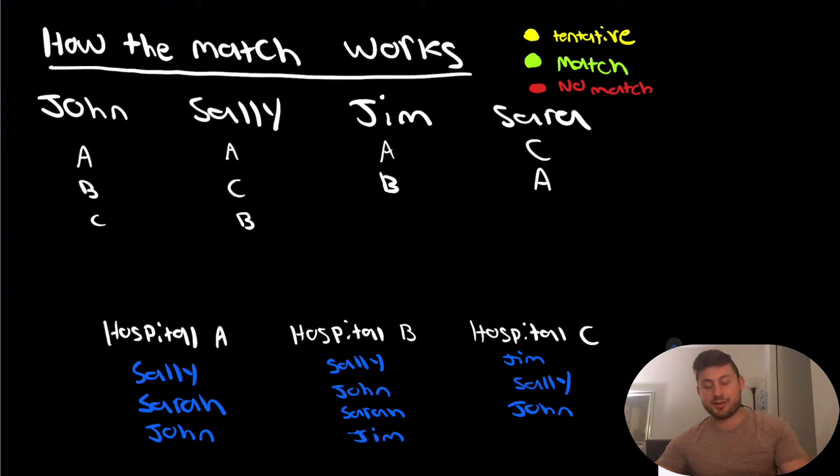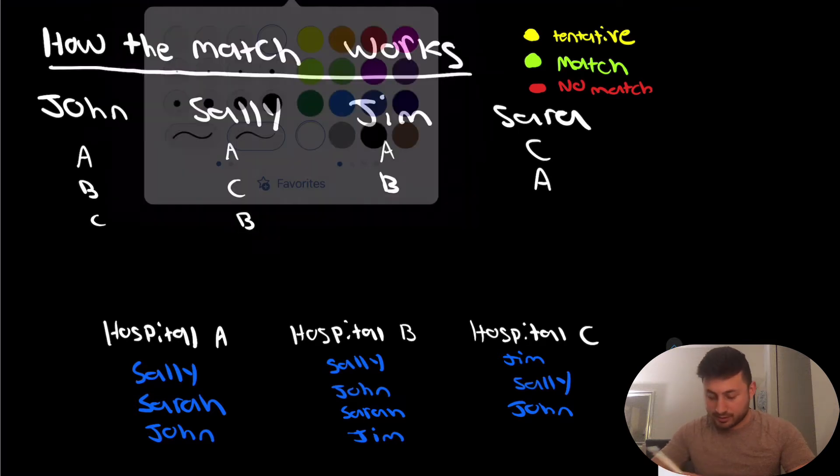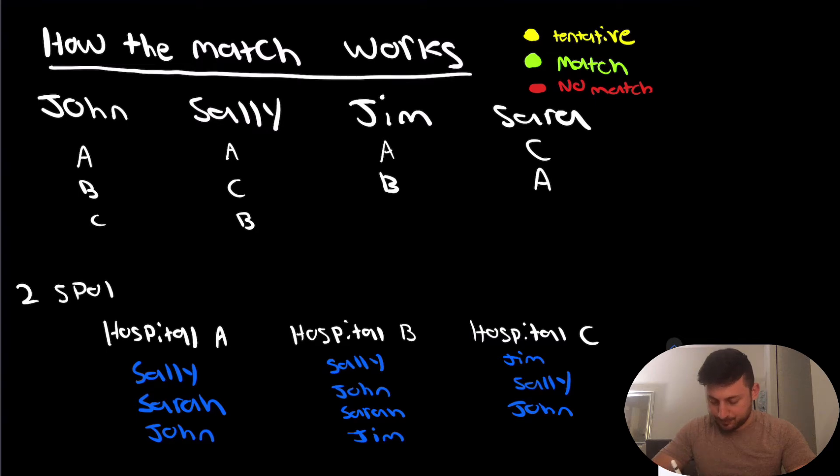So let's take a look at this hypothetical situation. As you can see here, we have the four applicants and their choice in order of where they want to go. Now, assume that each of these three programs actually only has two spots. And I have a little color code key in the top right corner. The different options are going to be someone either tentatively matches at the program, they definitively match at the program, or they don't match. So the algorithm is going to go through all four applicants. In the real thing, it's many more than this, but we're just doing a short example so you can start to understand the concept.